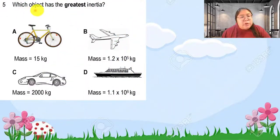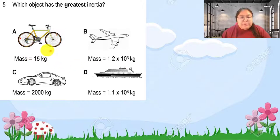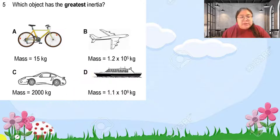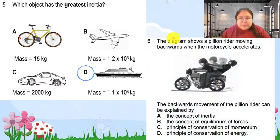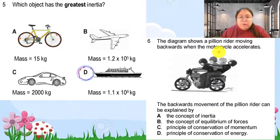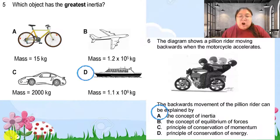Question five asks which object has the greatest inertia — greatest inertia is related to the highest mass. The bicycle is 15 kg, the car is 2,000 kg, the airplane is 1.2 × 10⁵, and the ship is 10⁸, so the answer is D — the ship has the highest mass and therefore the greatest inertia. Question six: the rider moves backward when the motorcycle accelerates because the rider is not ready to change motion — this is explained by the concept of inertia.